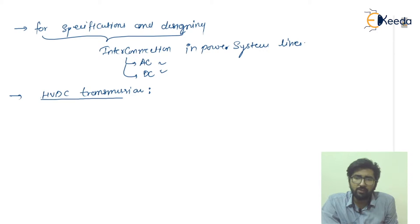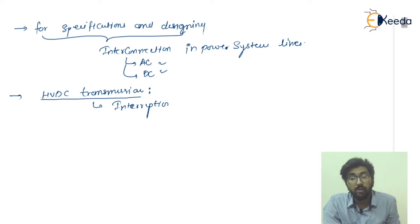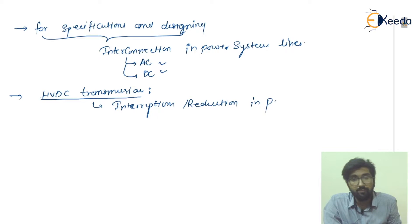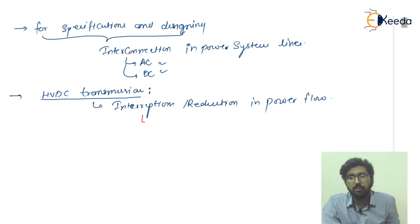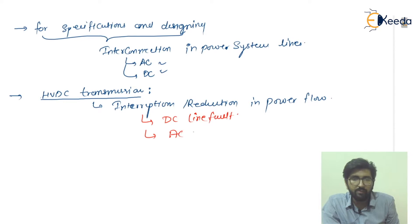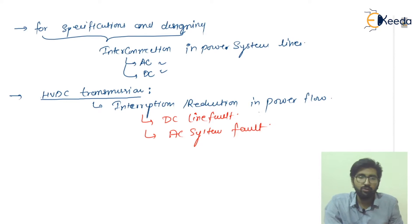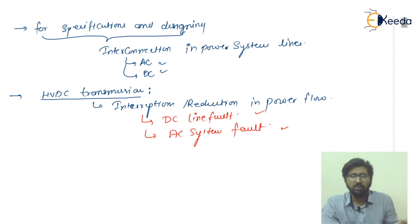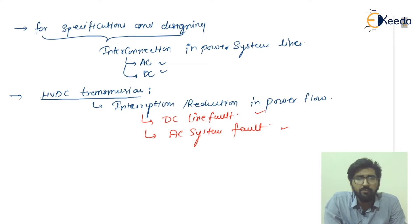In HVDC transmission, if there is an interruption — or you can say a reduction in power flow — there may be two chances: first is a DC line fault, and second may be an AC system fault. So that you have to remember.